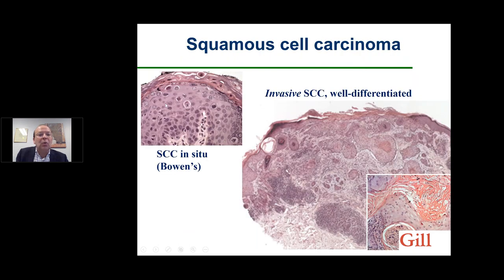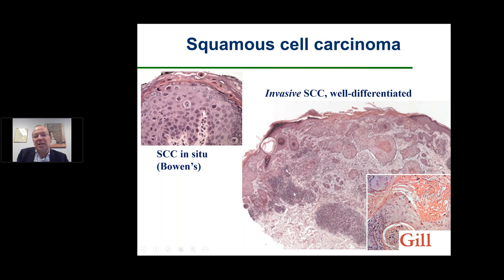This is an example of a squamous cell carcinoma arising in sun-damaged skin with a precancerous lesion called an actinic keratosis or AK. Another example shows a squamous cell carcinoma in situ — we call it in situ when it is confined only to the epidermis. Another name for these lesions is Bowen's disease, which you may have seen in a pathology report. This is an invasive squamous cell carcinoma that is associated with low risk of further tumor evolution.